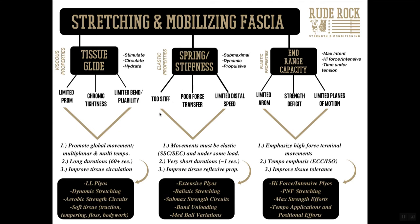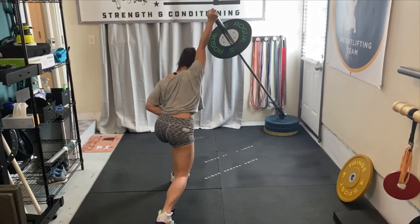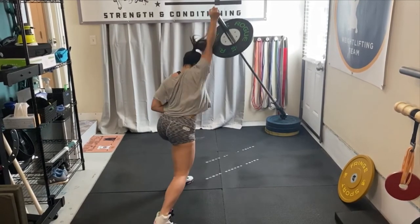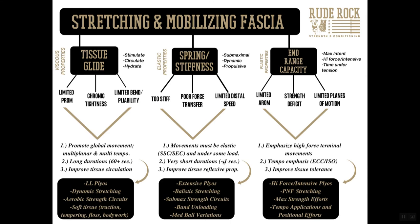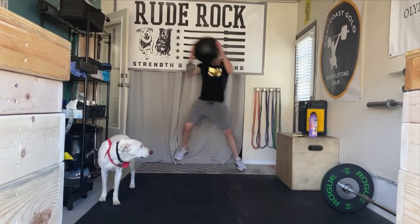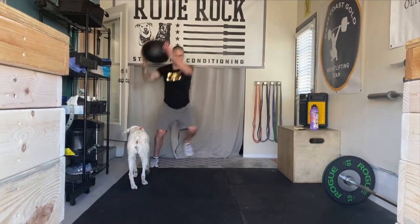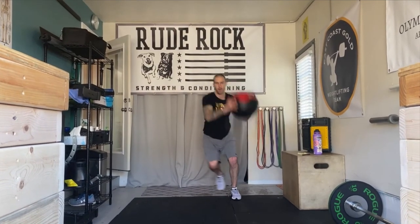For athletes having trouble with elastic properties — too stiff, poor force transfer, or poor terminal or distal speed — we look to submaximal loading, dynamic movements, and propulsive actions that initiate the stretch-shortening cycle and series elastic component, which requires some load. Whereas viscous work targets a minute or more, elastic work targets a second or less — very short, quick iterations. This drives the tissue's reflexive properties. We're thinking extensive plyos at low effort, ballistic stretching, submaximal strength circuits. Band unloading is good because it allows them to move faster than their body is naturally capable of. Med ball variations are a great bang for your buck here.